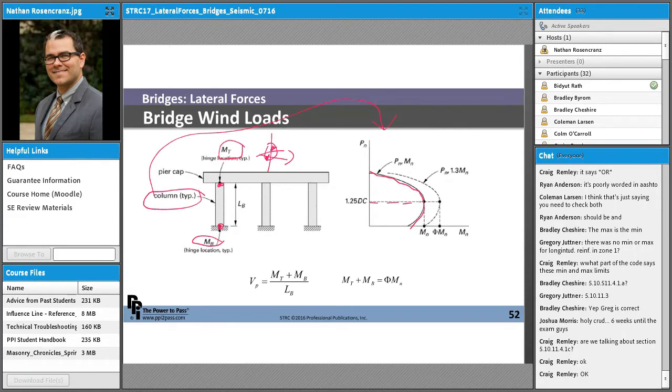So what they're getting at with that is essentially you're designing for dead load only or dead plus earthquake live and that's going to be multiplied by a factor of 1.25.